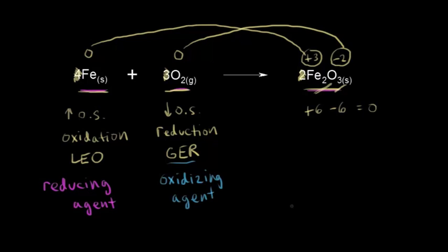This can be confusing to students. It makes sense that iron is being oxidized, but then we say it's the reducing agent. It's just the definition: your reducing agent itself is being oxidized, and it's allowing something else to be reduced. For oxygen, those atoms have a decrease in their oxidation state — they are being reduced — but by being reduced, they allow something else to be oxidized. So O₂ is your oxidizing agent.